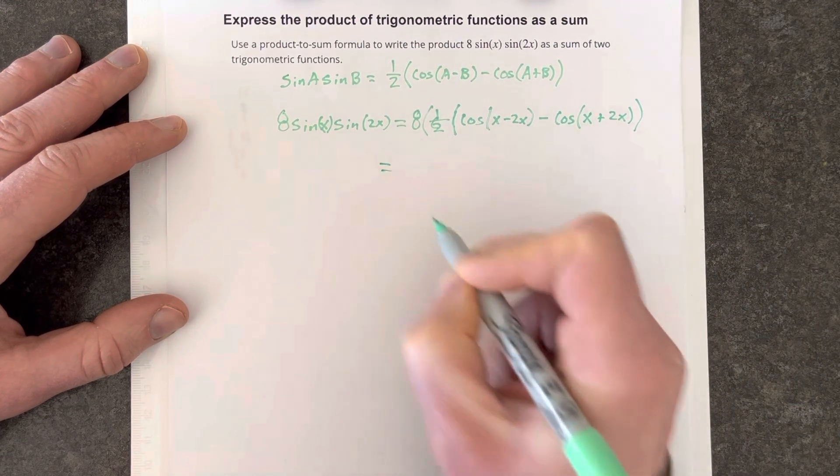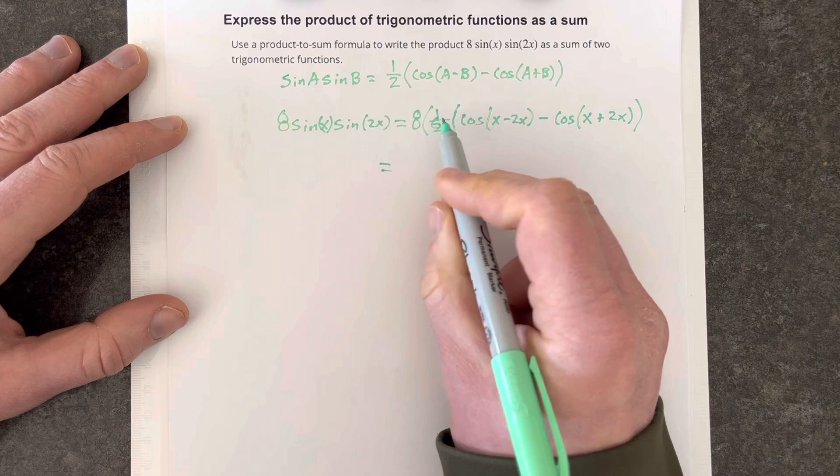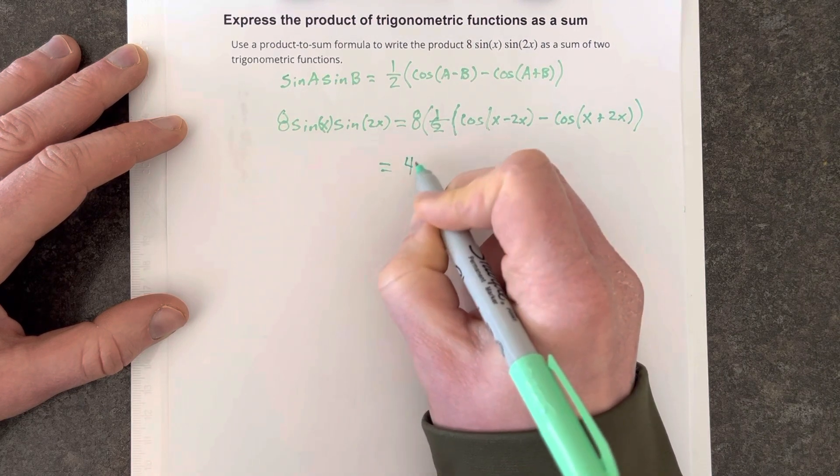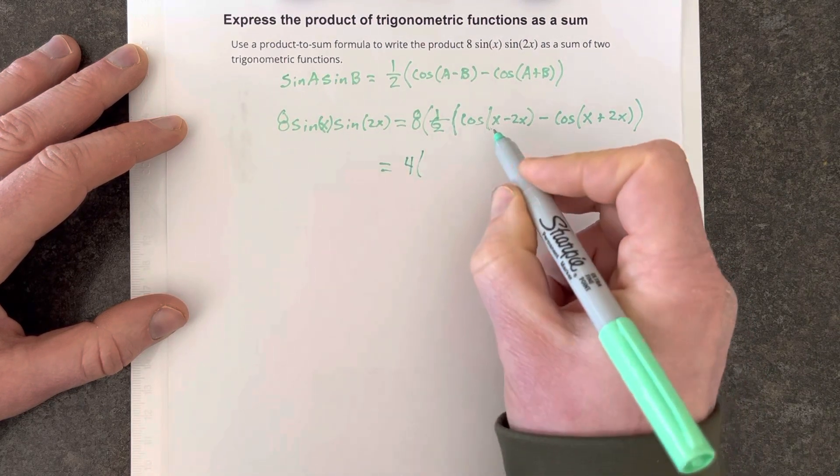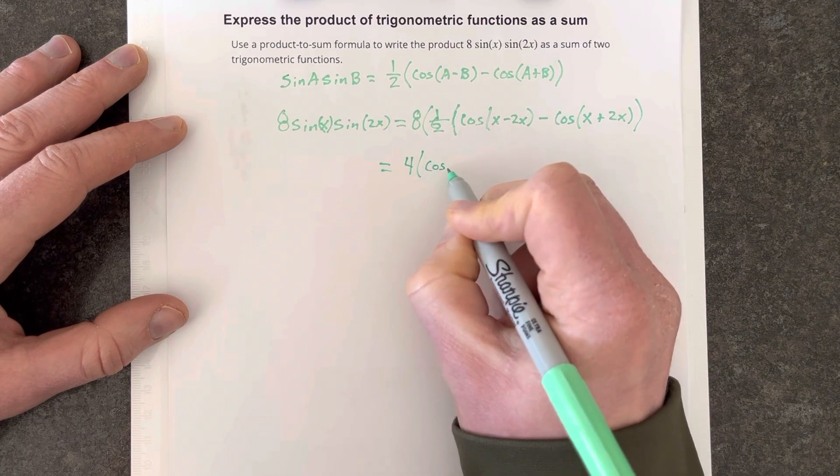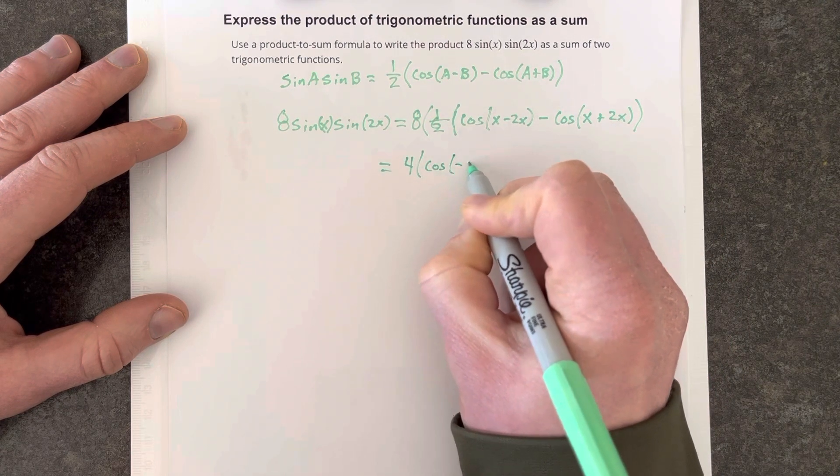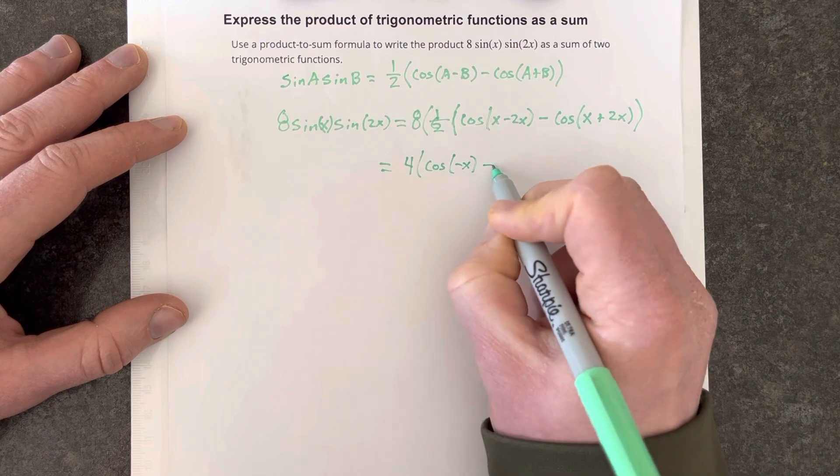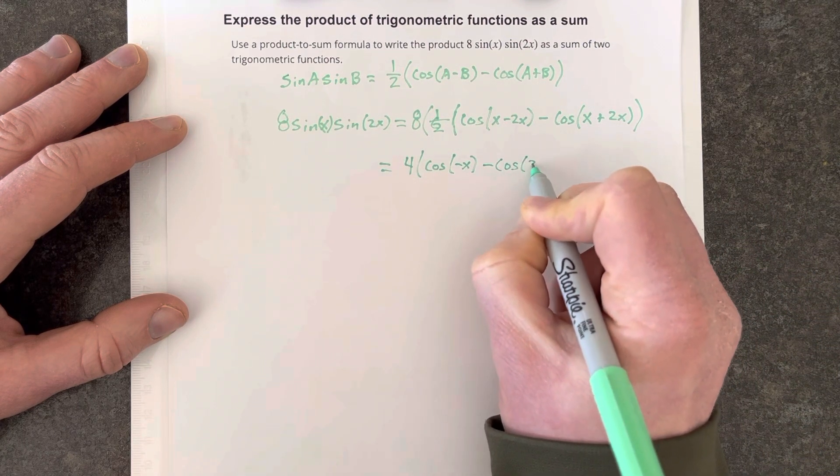And then we'd start to simplify this down. We take the 8 times the one-half and we end up with 4. So we have 4 times cosine of negative x minus cosine of 3x.